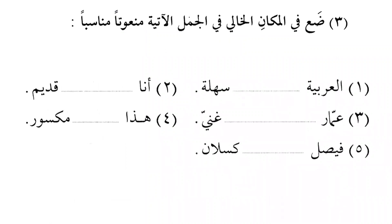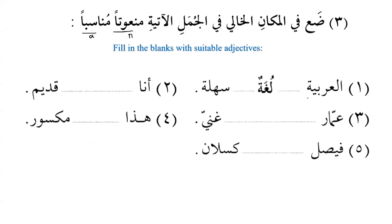'Jumal' is the plural of 'jumlatun' — be careful, 'jamal' is camel, while 'jumal' means sentences. Fill in suitable adjectives: 'Na'tan munasiban.' Here, na'tan itself is the noun and munasiban is its adjective — suitable adjective. Example: 'Al-'arabiyyatu lughatun sahlatun' — Arabic is an easy language. 'Ana tajirun qadimun' or 'ana talibun qadimun' or 'ana mudarrisun qadimun.'